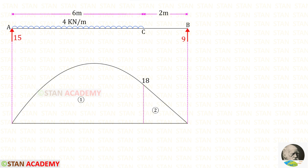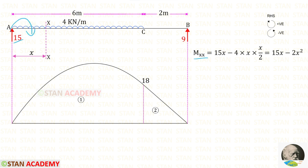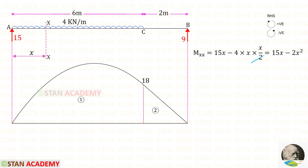We have to find the area of this diagram. For the triangle we can easily find the area, but for the parabola it is irregular, so we have to use integration. I have made a section XX at a distance of x from point A, and we find the moment in this section. The reaction is positive: 15x. The UDL is negative, and multiplying distance × distance/2 gives x²/2. So the moment expression becomes 15x − 2x².